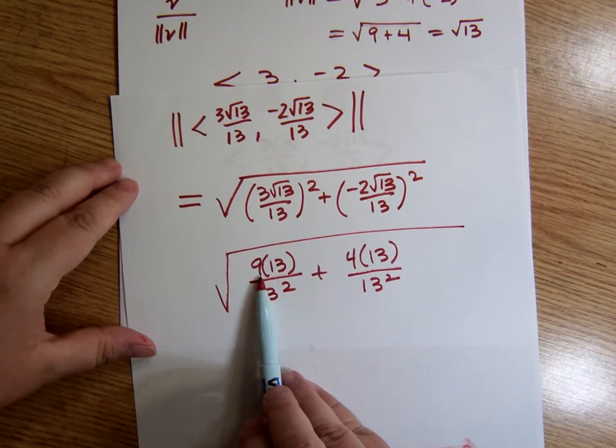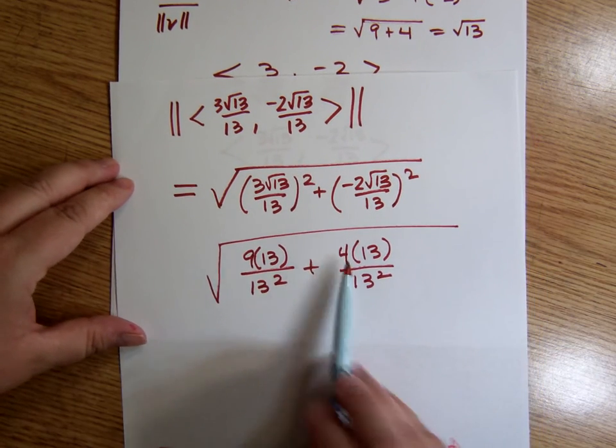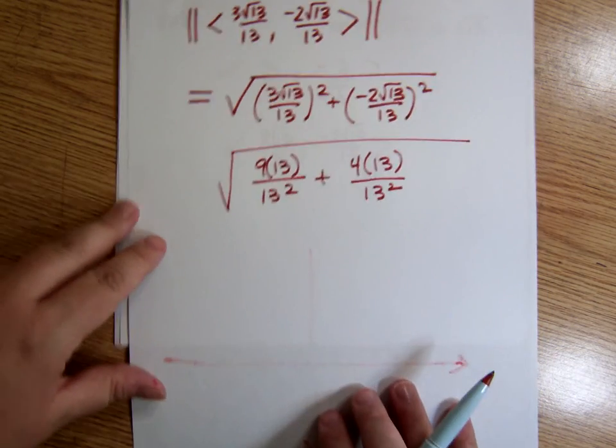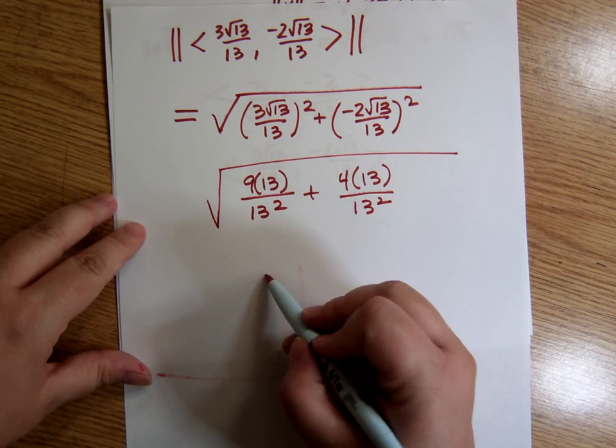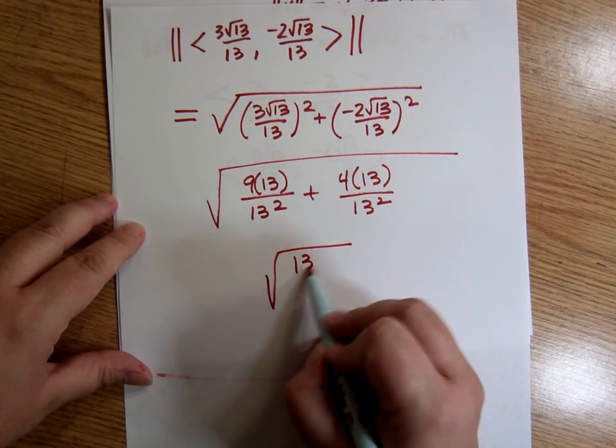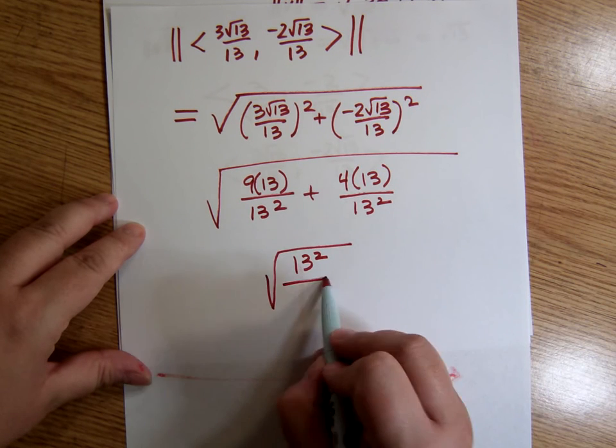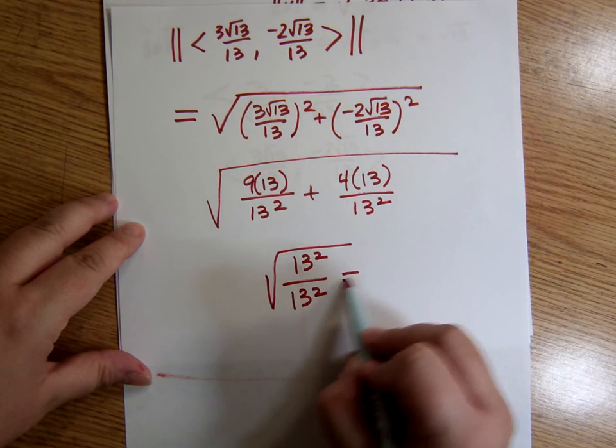If I have 9 of something and 4 more of that thing, then I have 13 of them. So in other words, 9 13s plus 4 13s is 13 13s. So I have 13 13s. 13 squared over 13 squared. Anything over itself is just 1.